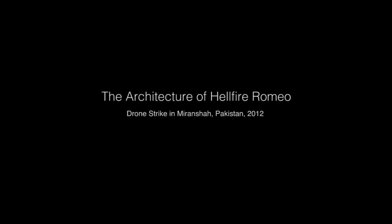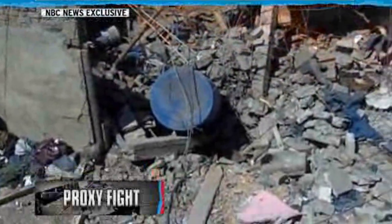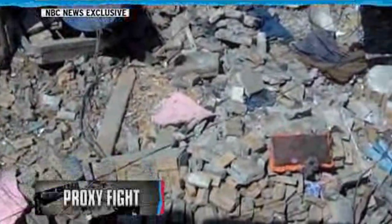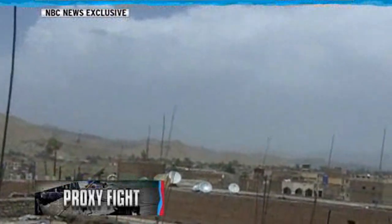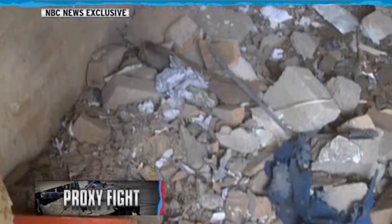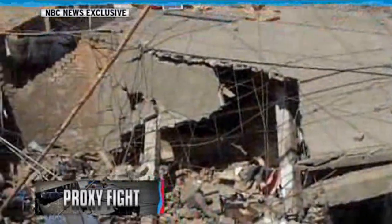This is what many Pakistanis call evidence of an American war with their country. In June 2012, a video clip was smuggled out of the besieged region of Waziristan, Pakistan. NBC aired 43 seconds of it, showing a ruin — the aftermath of a US drone strike in the city of Miran Shah, in which four people had reportedly been killed.